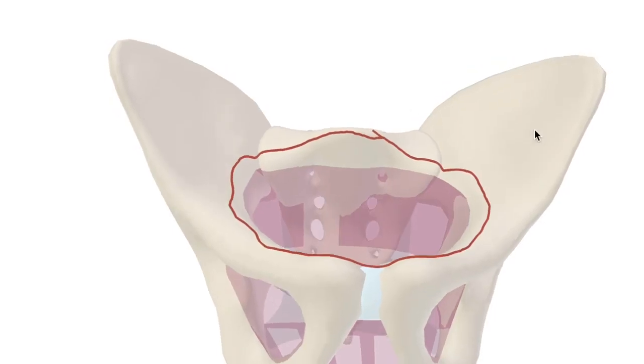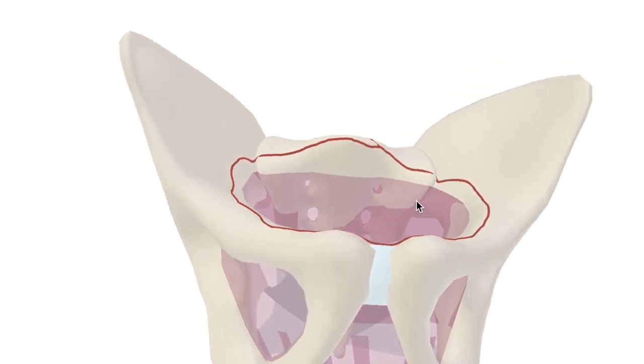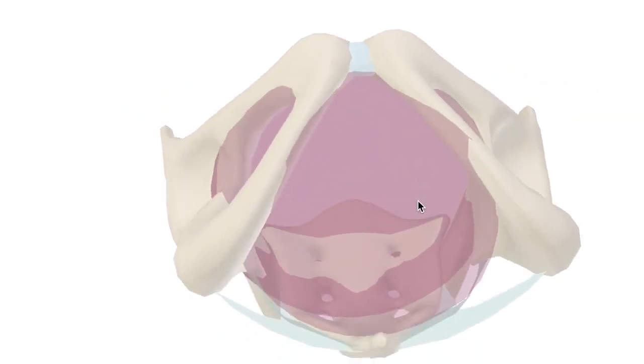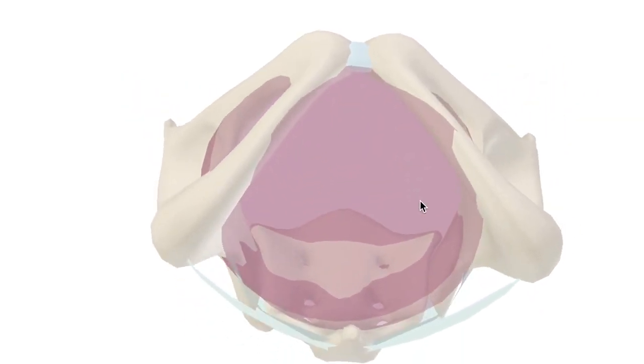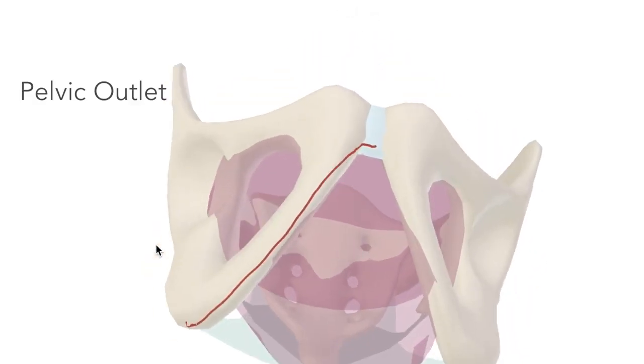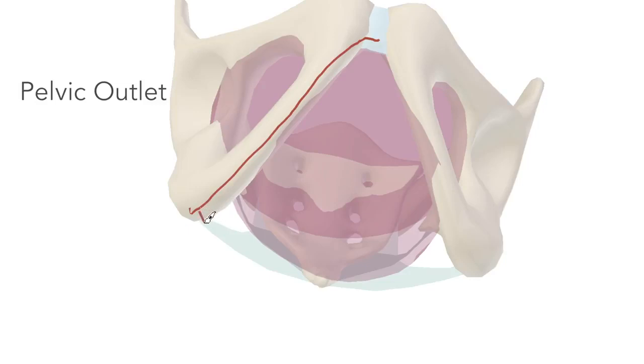If we look around the other side now, let's talk about the pelvic outlet. Pubic symphysis, ischiopubic ramus, ischial tuberosities, and we'll just take another angle to draw this back part in.